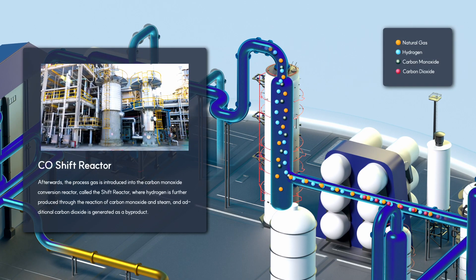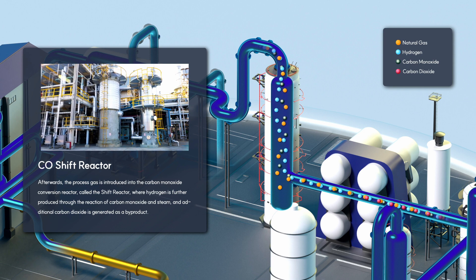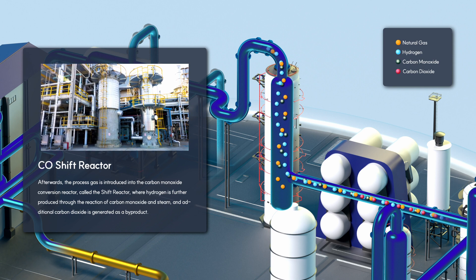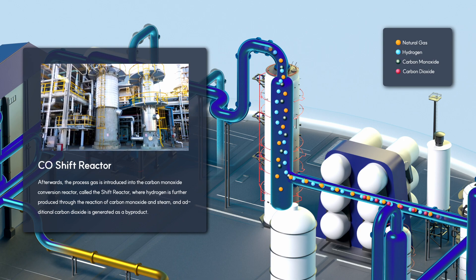The process gas is introduced into the carbon monoxide conversion reactor called the shift reactor, where hydrogen is further produced through the reaction of carbon monoxide and steam, and additional carbon dioxide is generated as a byproduct.